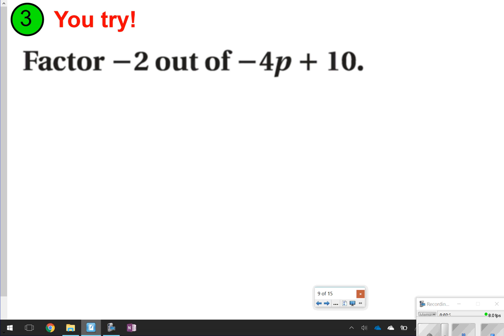For number 3, you're going to try it. This one actually tells you what to factor. Sometimes it will tell you what to factor, sometimes not. Go ahead and pause the video. You're going to factor negative 2 out of negative 4p plus 10. Remember, you should have something on the outside and then some stuff in the inside of your parentheses. Go ahead and try it now.